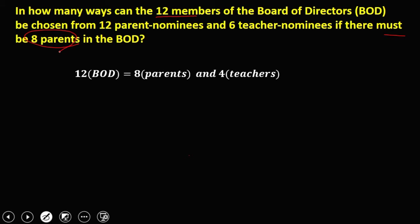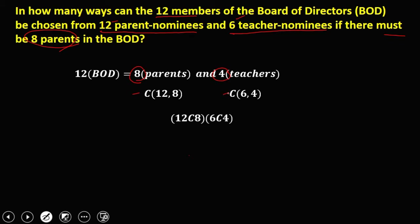We have 12 parent nominees, so we need to choose 8 from 12, and 6 teacher nominees, so we need to choose 4 from 6. We can rewrite this as 12 choose 8 times 6 choose 4.